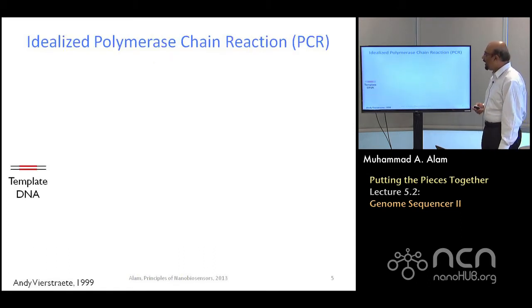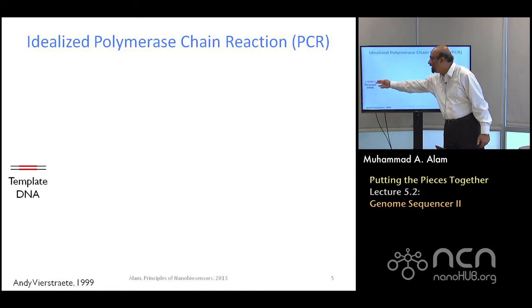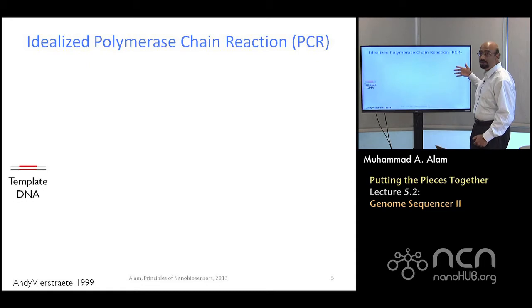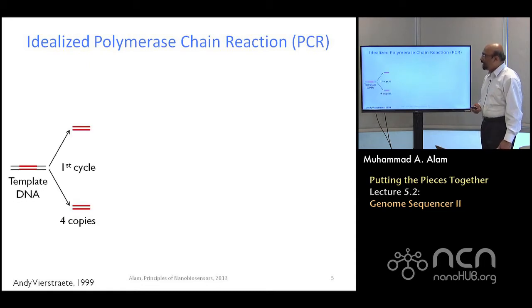You may recall that I mentioned one way of amplifying the number of DNA you have. Assume this is 100 base pairs. I want to make 10,000 copies of this. How should I do it? In the first cycle of PCR, this polymerase chain reaction, it's almost like a nuclear chain reaction.